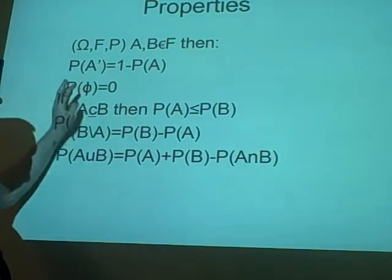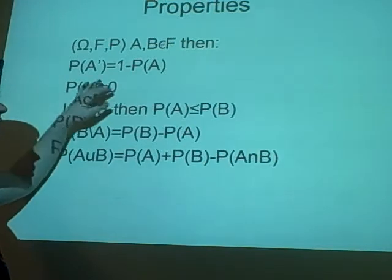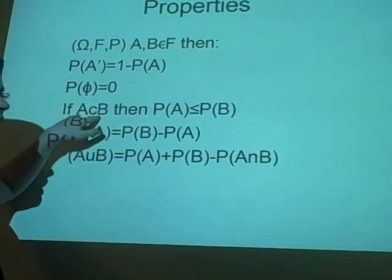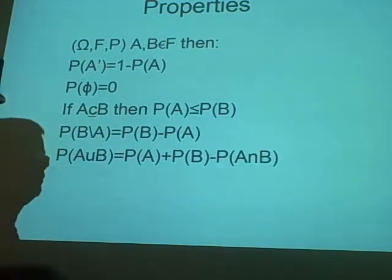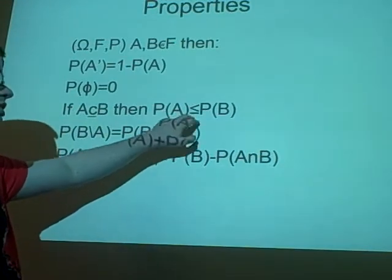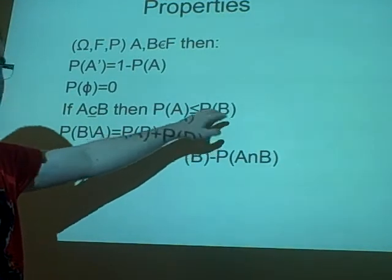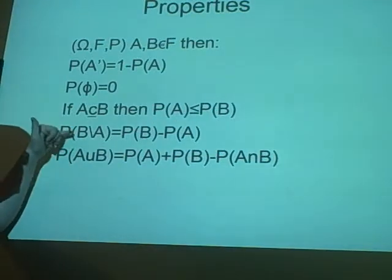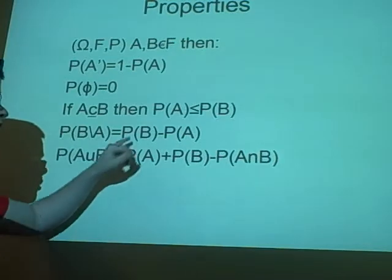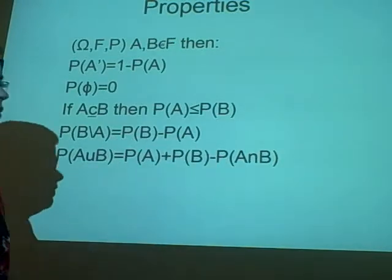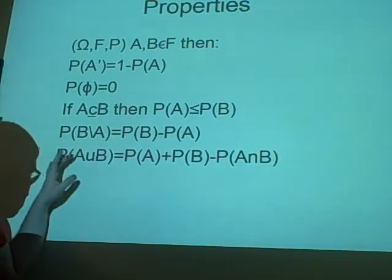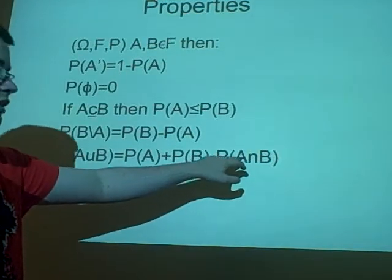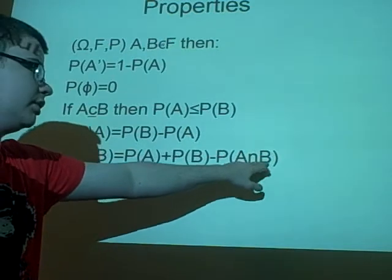The probability that nothing happens is nothing, surprisingly. If A is a subset of B, then the probability of A is less than or equal to the probability of B, these are just very boring, roll off the tongue. The probability that it's B not A is the probability of B minus the probability of A. The probability of A union B is the probability of A plus the probability of B minus the probability of A and B.